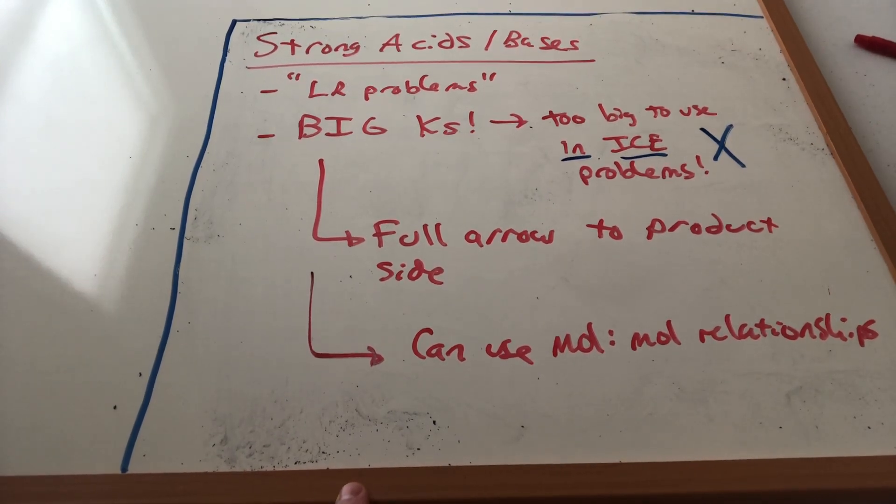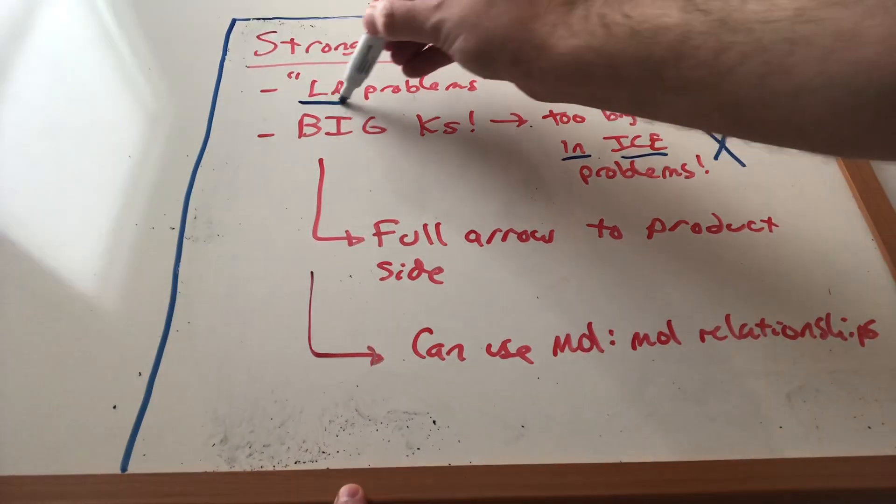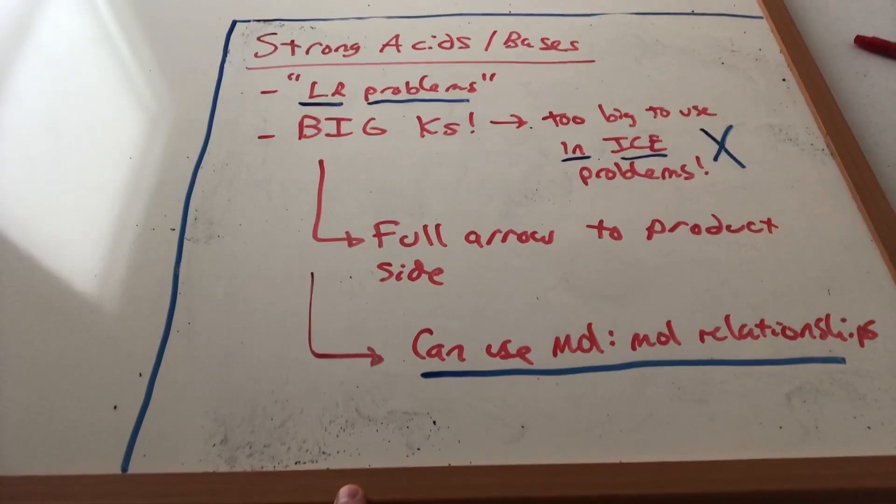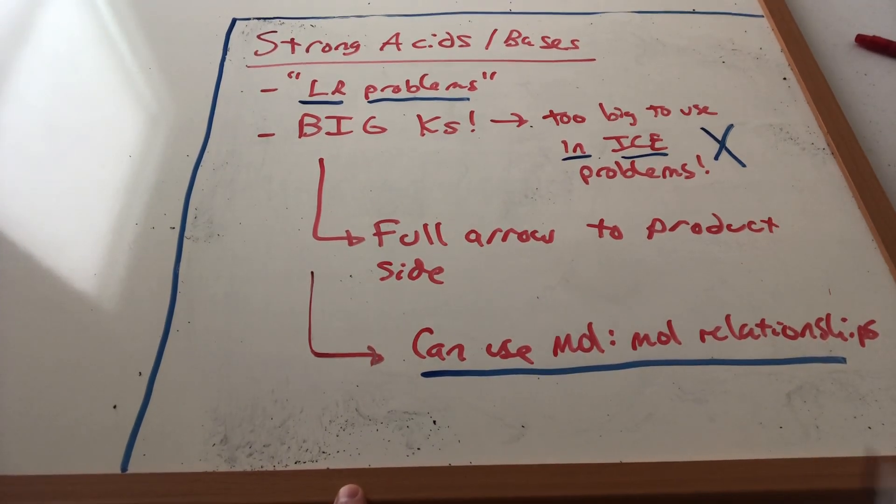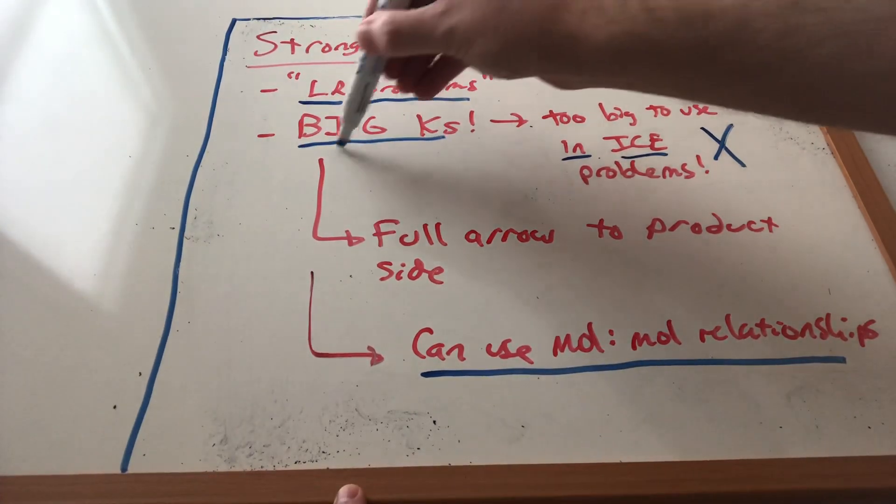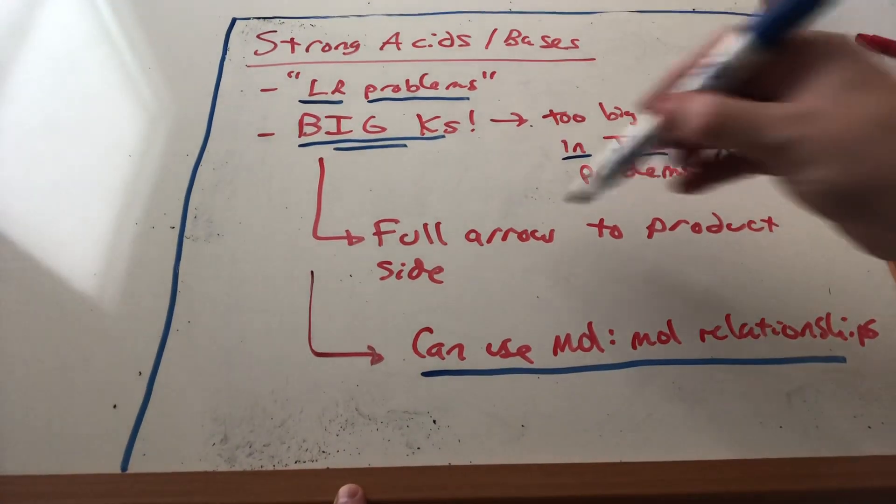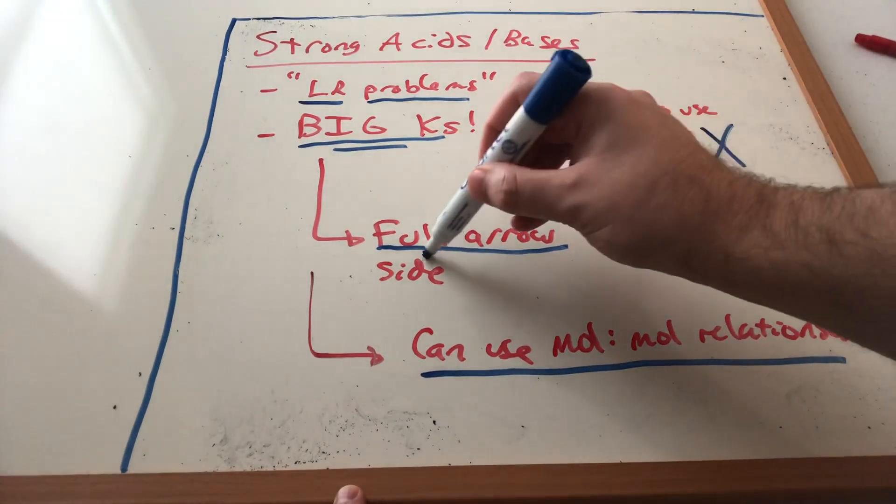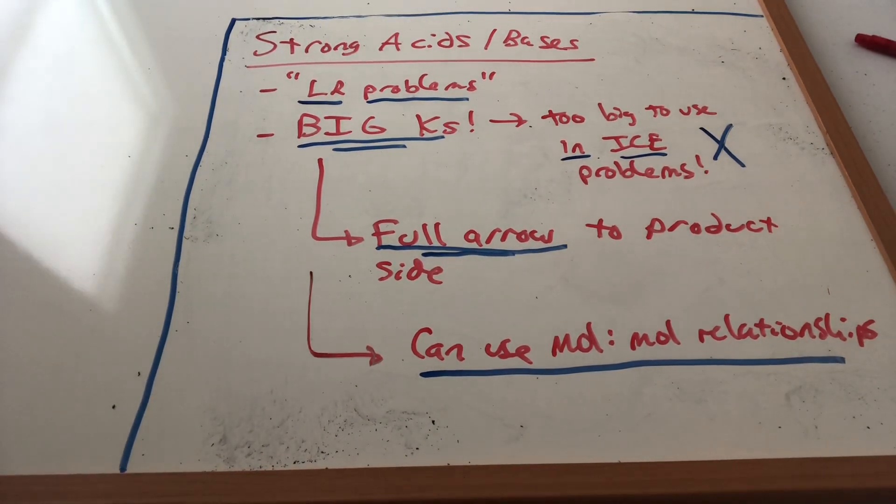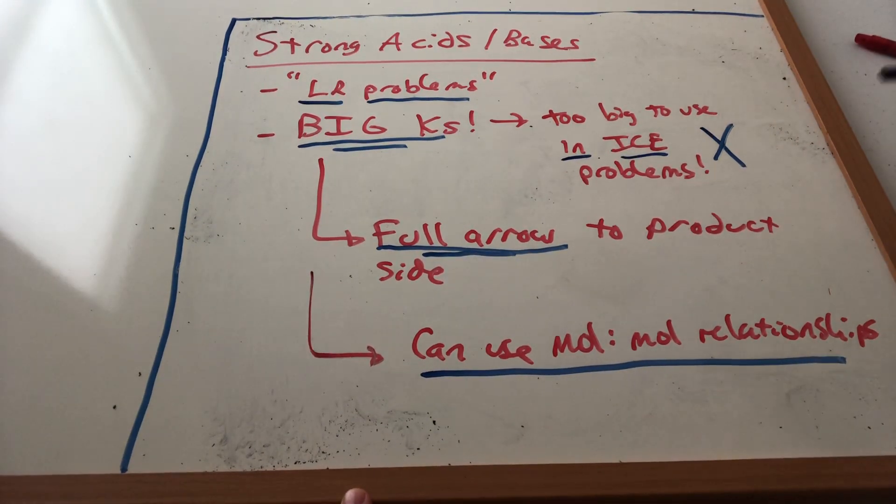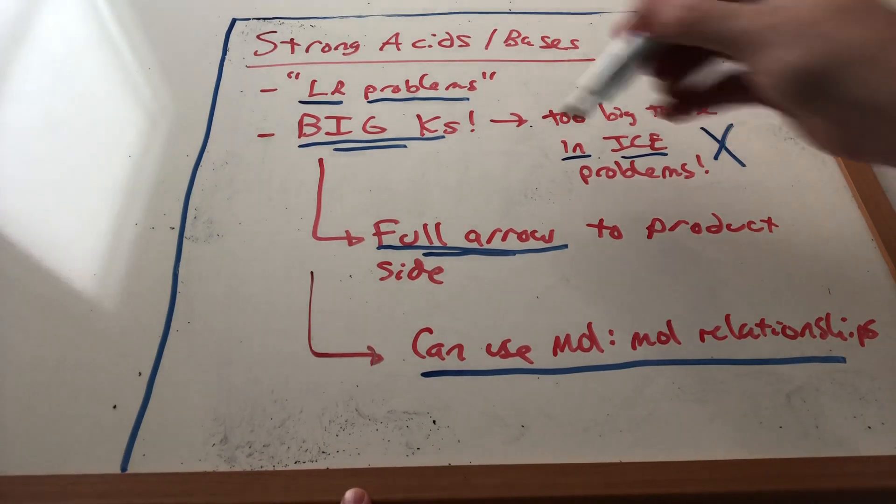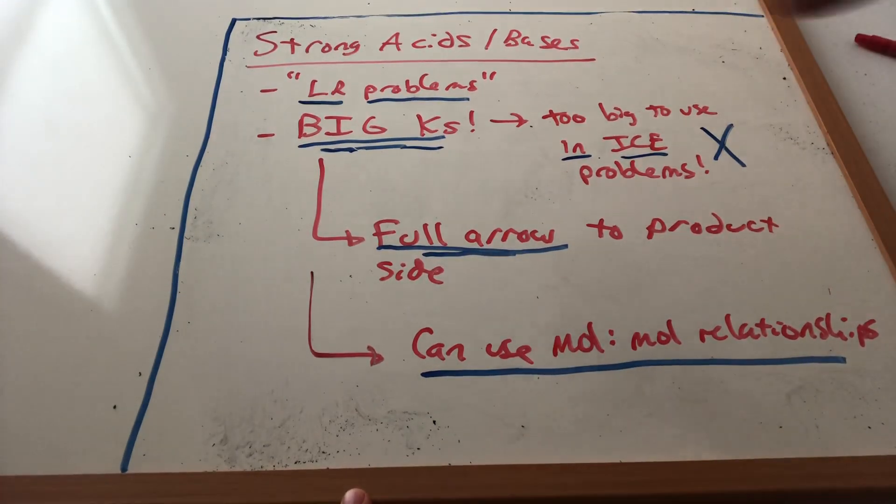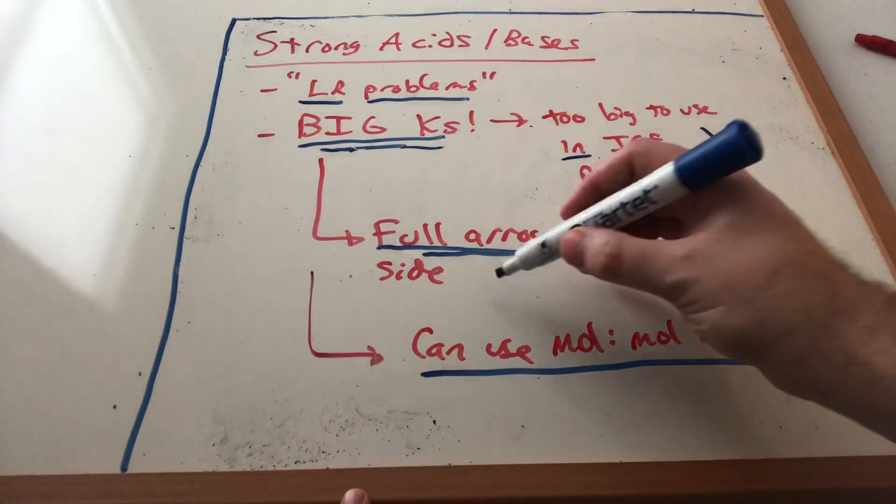They're stronger than weak acids. We do limiting reactant type problems that utilize mole to mole relationships just like you did last semester. The K's are so big that the product side is so favored that instead of thinking about a double arrow and doing an equilibrium problem, it's a full arrow to the product side. So whenever we see a strong species, we really treat it just like we did any reaction last semester. It's such a good approximation to just pretend that everything goes to the product side.